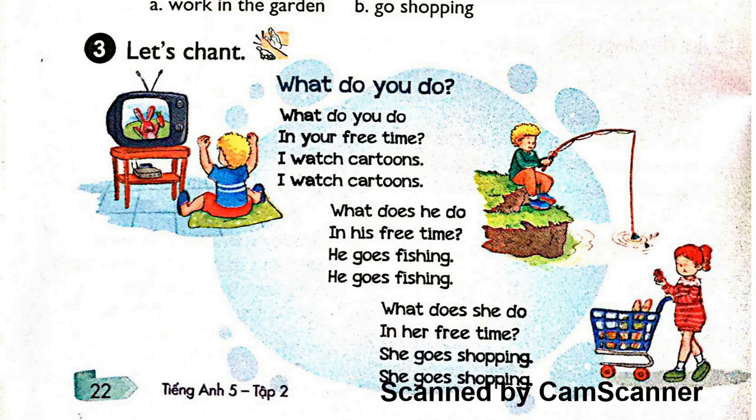Page 22. Activity 2. Listen and circle A or B. Then say the sentences aloud. 1. What do you do in your free time? I clean the house. 2. What does she do in her free time? She goes skating.